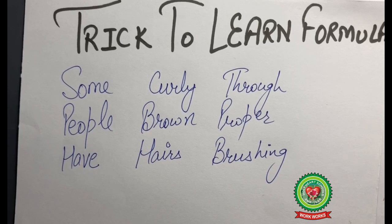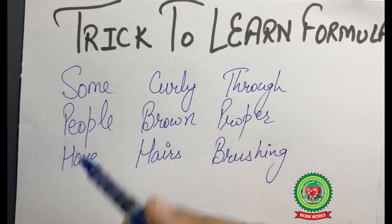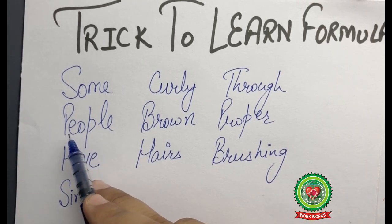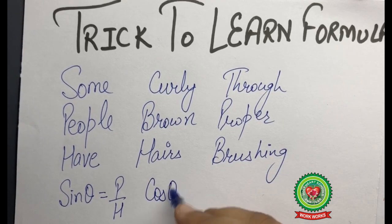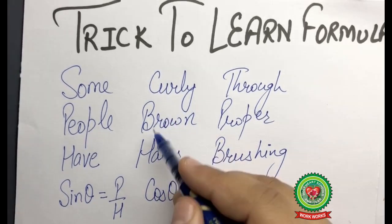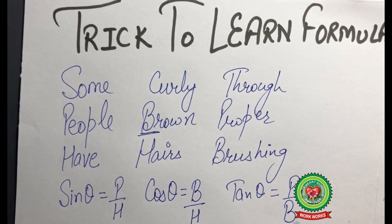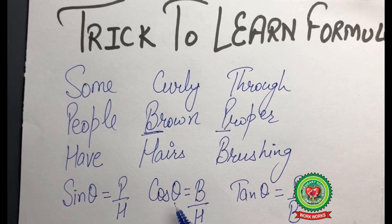How are we going to remember the formulas from this line? We will use the first alphabet of each word. For example, 'some people have' — the first alphabets are S, P, and H. Here S means sine theta, and using P of 'people' and H of 'have,' sine theta equals P upon H. Similarly, cos theta equals base upon hypotenuse, and tan theta equals perpendicular upon base. For the other three ratios, they are simply the reciprocals of sine theta, cos theta, and tangent theta.